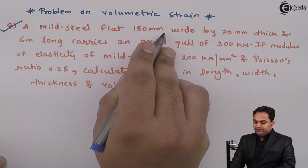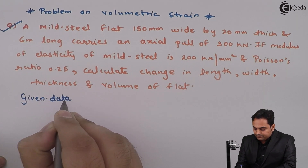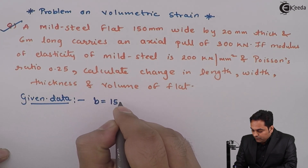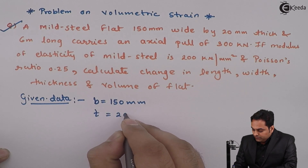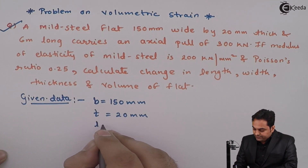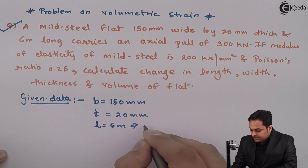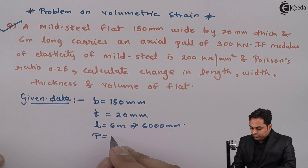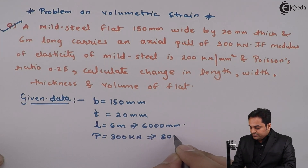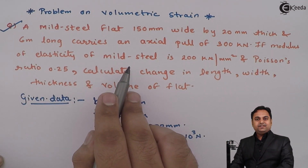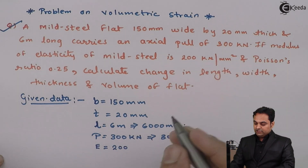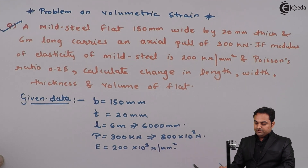A mild steel flat is 150 mm wide by 20 mm thick, so width is 150 mm, thickness is 20 mm, and 6 meters long, which is 6000 mm. It carries an axial pull of 300 kN, which is 300 × 10³ N. The modulus of elasticity E is 200 kN/mm², which is 200 × 10³ N/mm², and Poisson's ratio μ is 0.25.